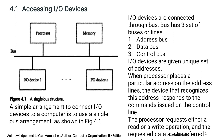Over this system bus, data transfer takes place between the processor, memory, and other parts — that is IO devices and any other part connected to the system bus. The processor initiates all data transfers, hence it is called the bus master. It has complete control over the system bus.